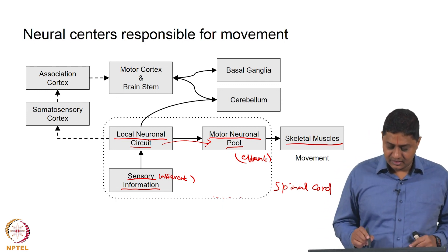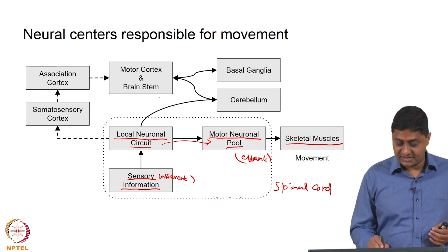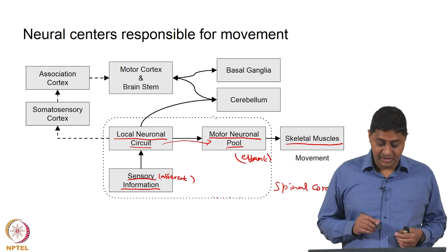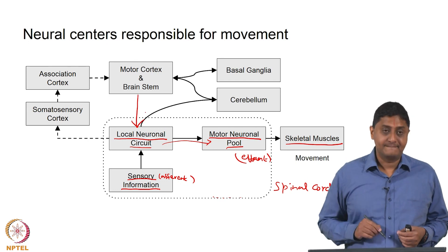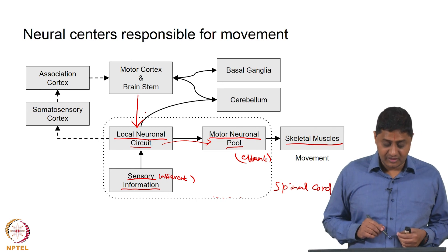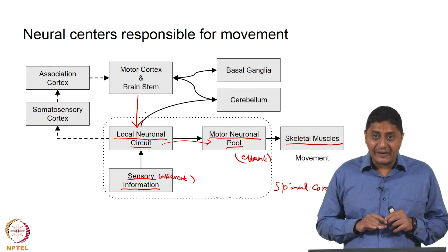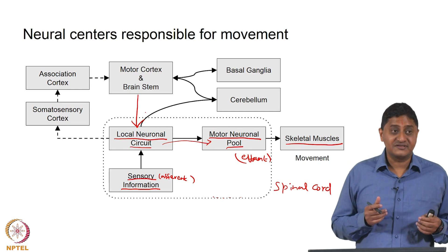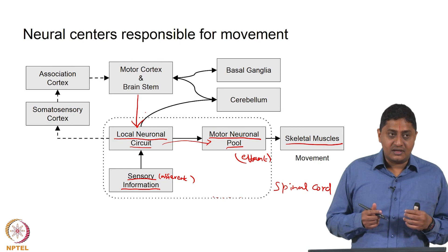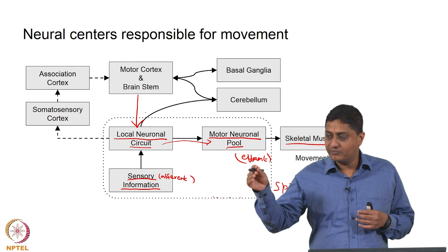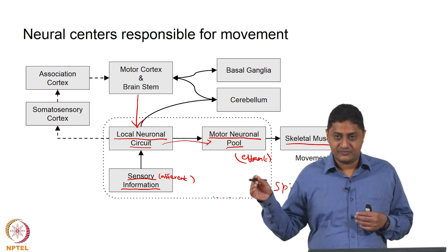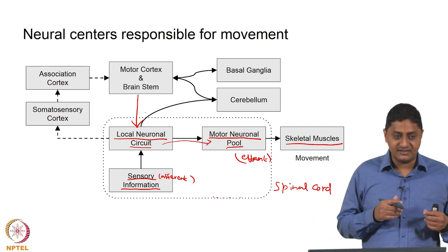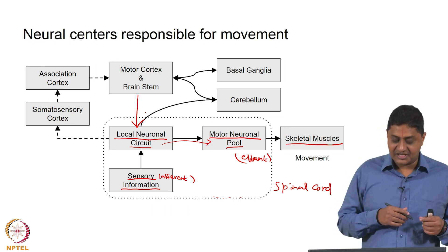This information modulates the local neuronal circuits, which through some processing control the motor neuronal pool and its excitability. Importantly, it is worth noting that the alpha motor neuronal pools do not receive information from the higher centers directly. What is happening instead is that information from the motor cortex and brainstem goes to the spinal cord, and it is the spinal cord that communicates with the alpha motor neuronal pool. We discussed this while discussing the size principle — the brain cannot decide which particular motor units to recruit.